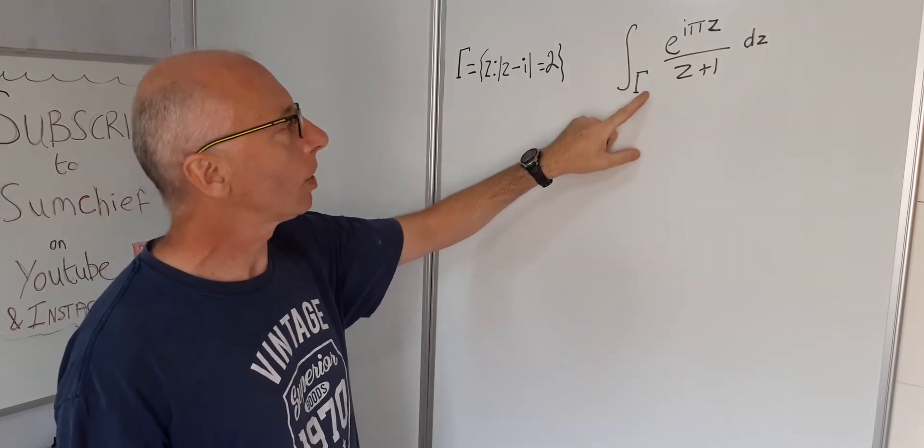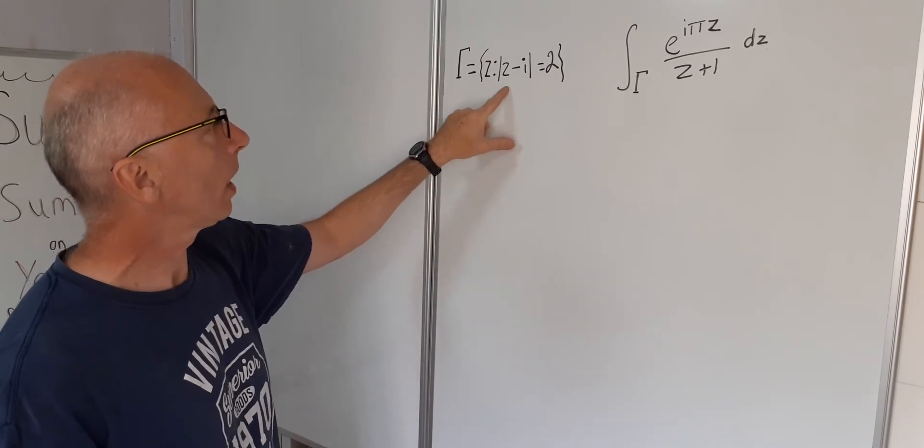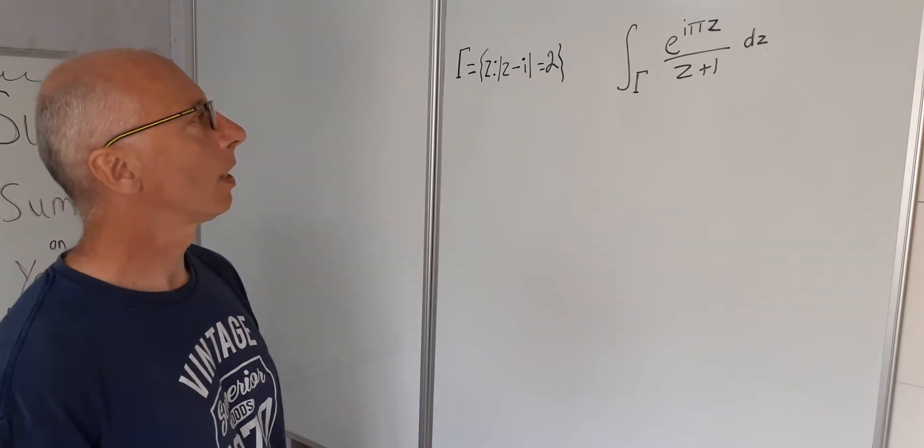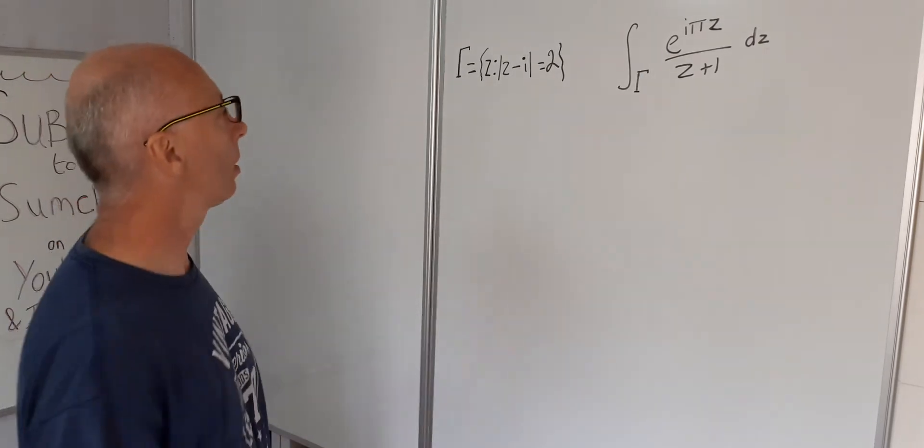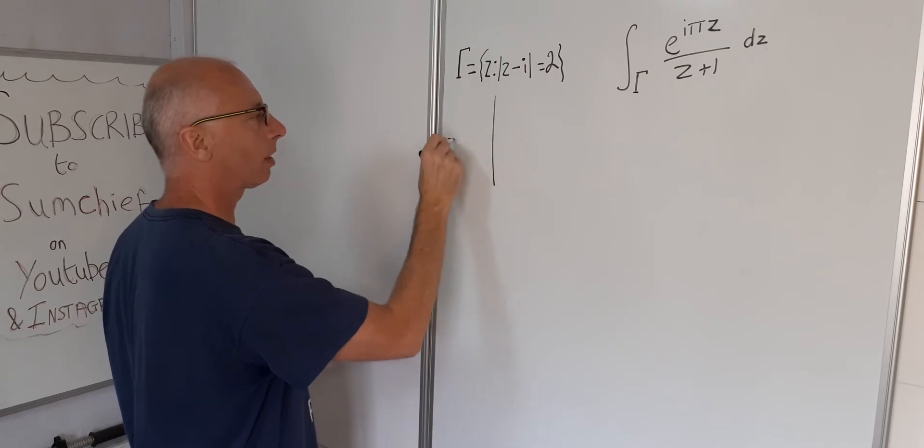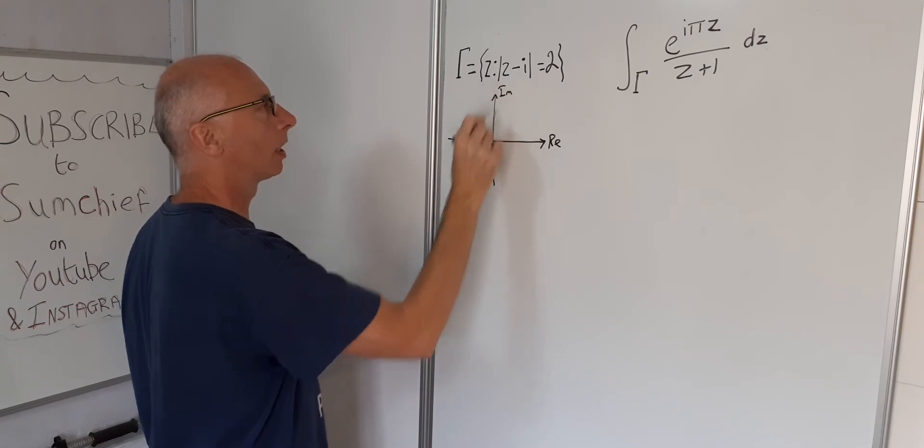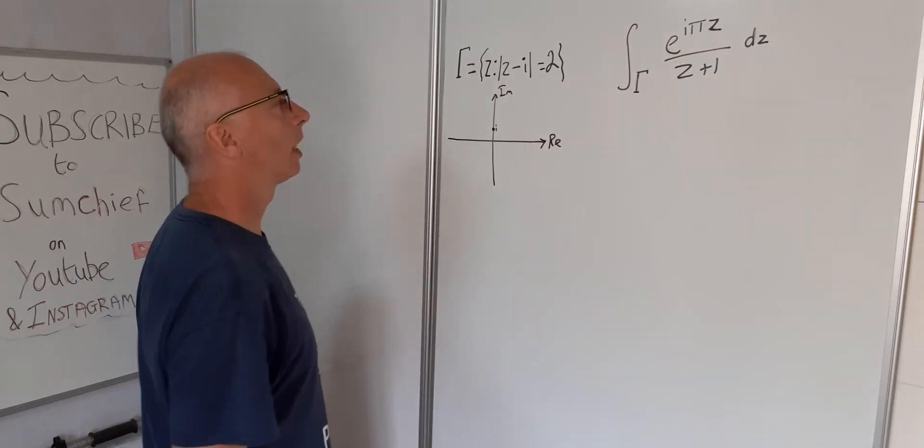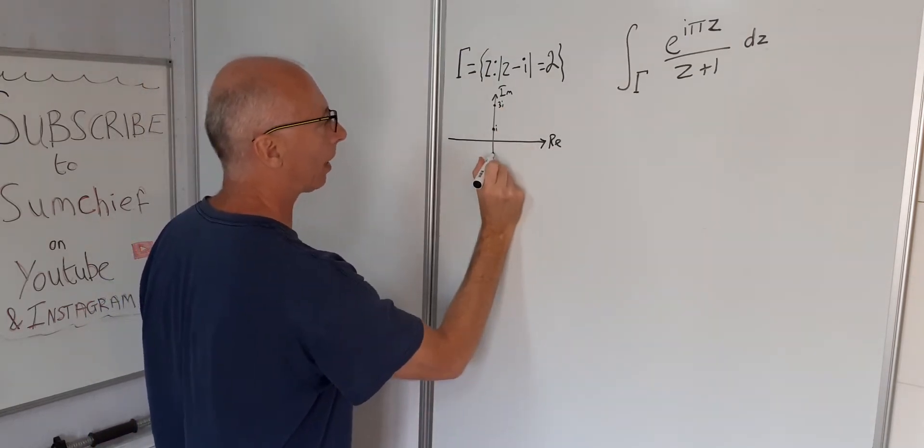And the parameters of integration is this gamma here. We're saying that gamma is where the modulus of z minus i equals 2. So let's first have a look at this gamma, which is our parameters of integration. So z minus i will have a center point of i and radius of 2, so it will reach out to 3i and minus i.